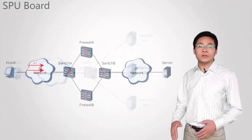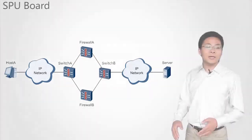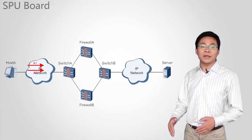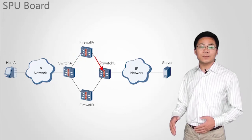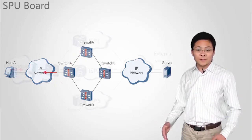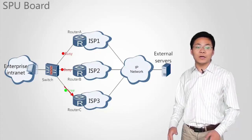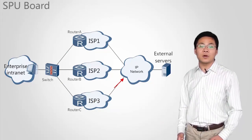When users on an enterprise network or a campus network access an external network, eGRACE link load balancing selects an available link to forward user traffic. This link must be responsive and provide sufficient bandwidth. This improves network availability. Firewall load balancing distributes network traffic among multiple firewalls to relieve the load of a single firewall and improve overall network processing capability.